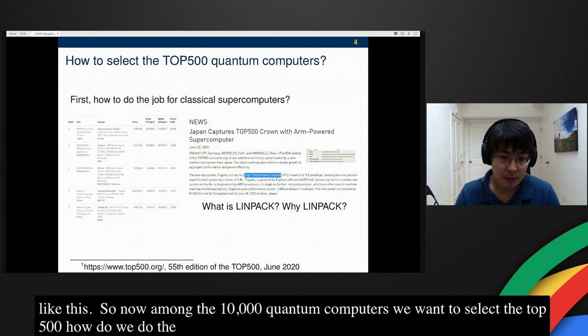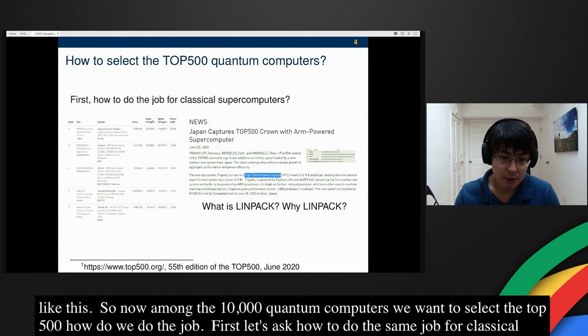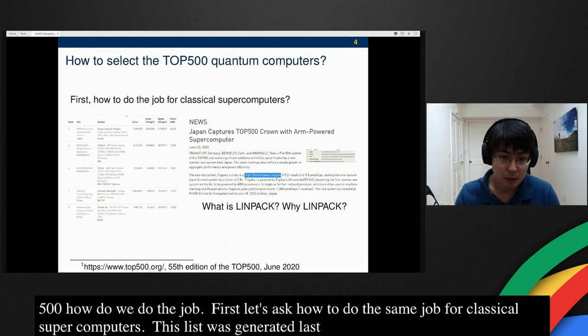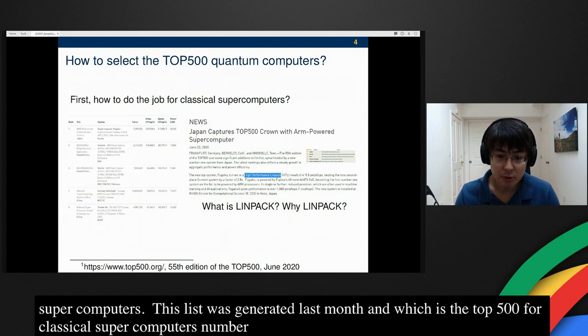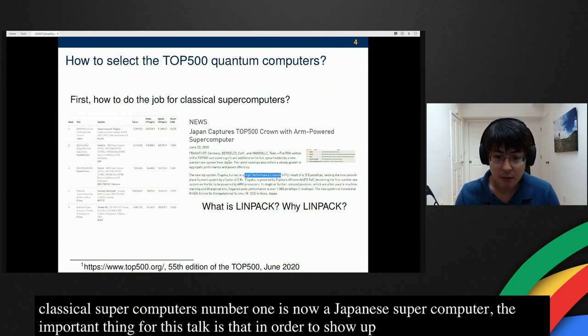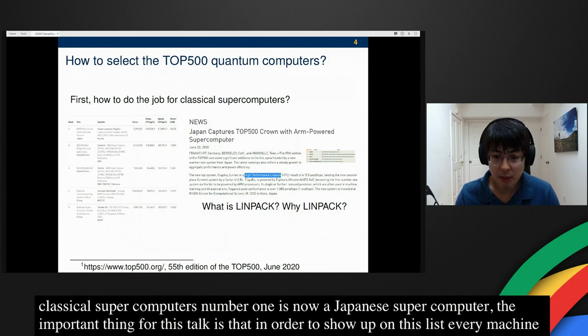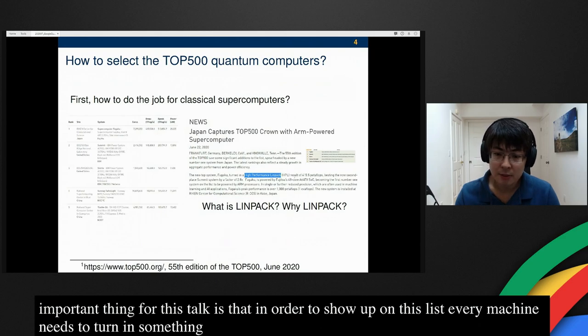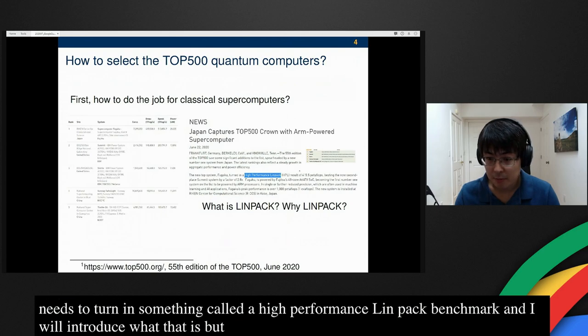First, let's ask how to do the same job for classical supercomputers. This list was generated last month, which is the top 500 for classical supercomputers. Number one is now a Japanese supercomputer called Fugaku. The important thing for this talk is that every machine needs to turn in something called a high performance LINPACK benchmark. Now let's say the number is 400 petaflops. We ask, what is LINPACK and why LINPACK?